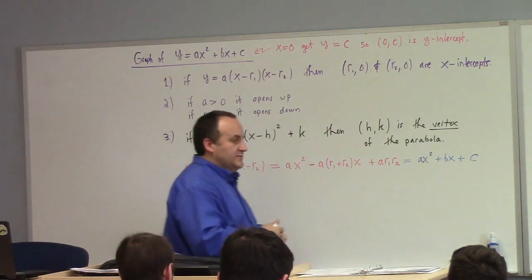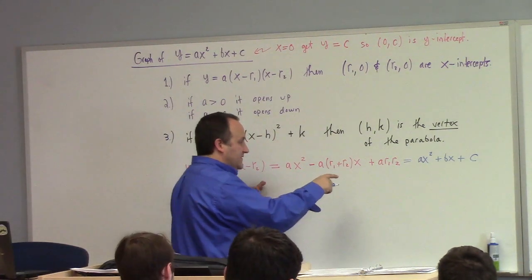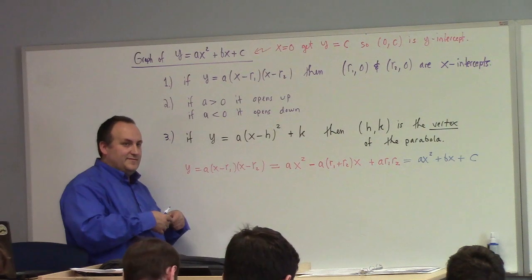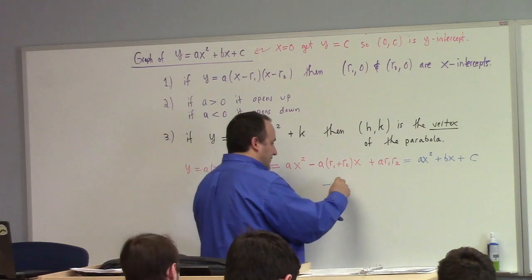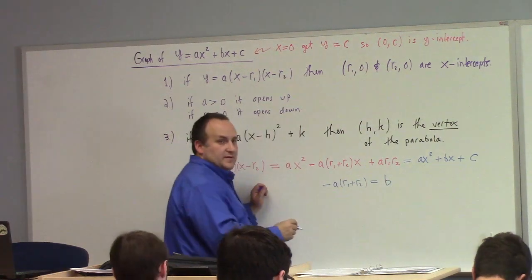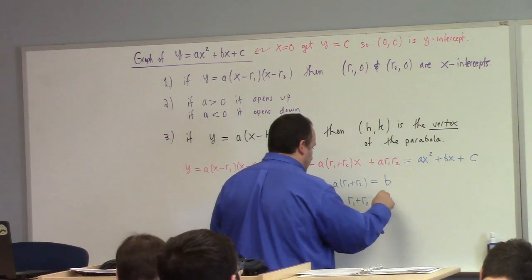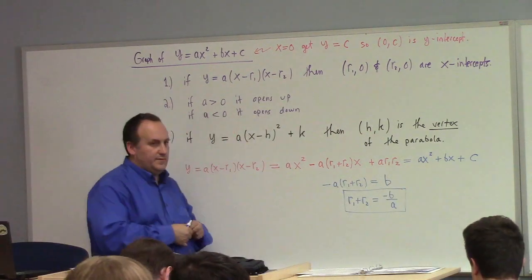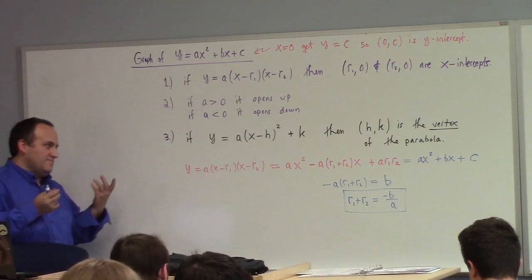Now, what's that equal to? It's still equal to ax squared plus bx plus c, right? So we can equate the coefficients. One of the formulas we can see is a equals a. The formula a equals a, we don't care about, right? However, this one right here, minus a times r1 plus r2 is equal to b, that's pretty nice. That says that the sum of the roots, r1 plus r2, is equal to minus b over a. That's probably useful to know about. The sum of the roots is the ratio of minus the b coefficient to the a coefficient.